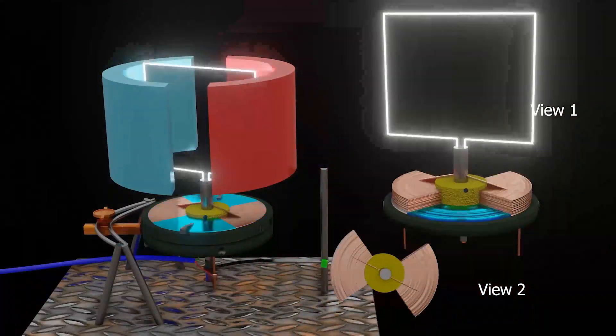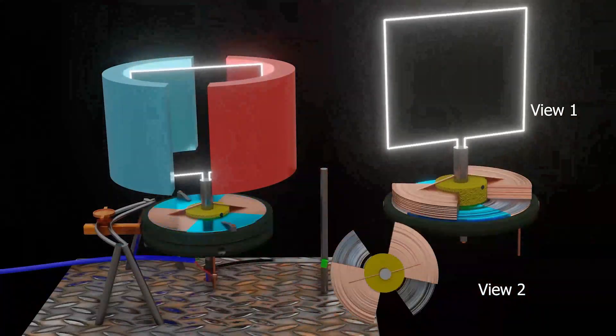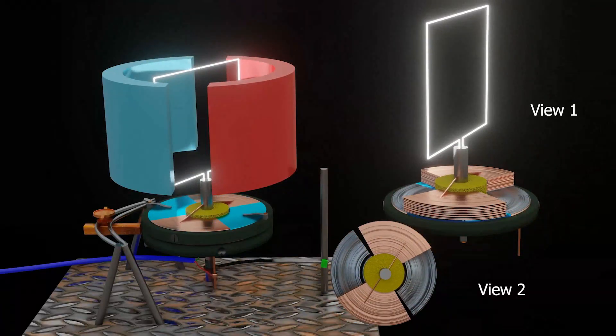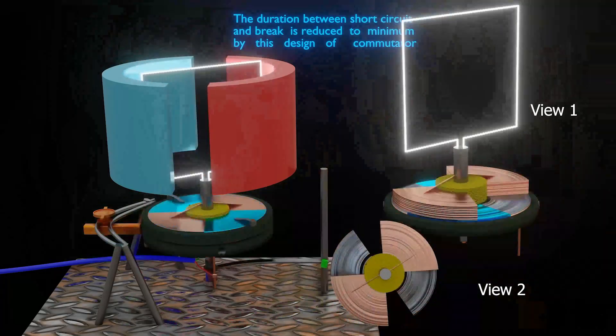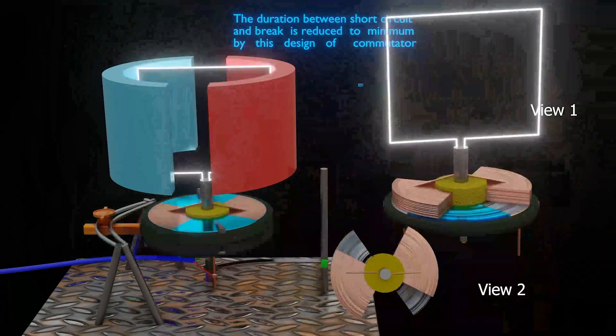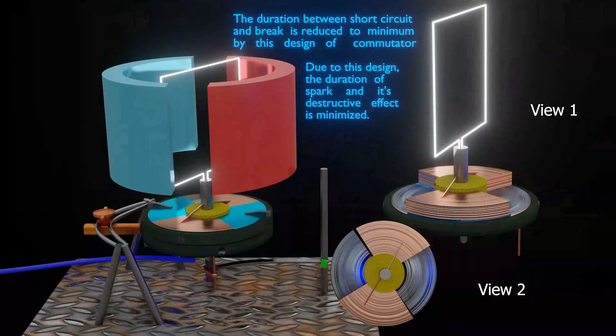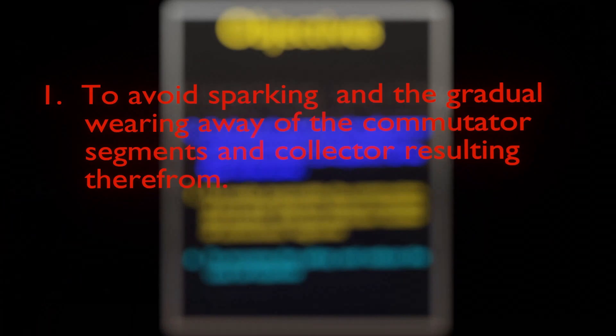We can also see that the duration of both the short circuit and the brake are reduced to a minimum. This results in diminishing the destructive effect of the spark, since this would be in a measure proportion to the duration of the sparks. So Tesla's first objective was fulfilled.